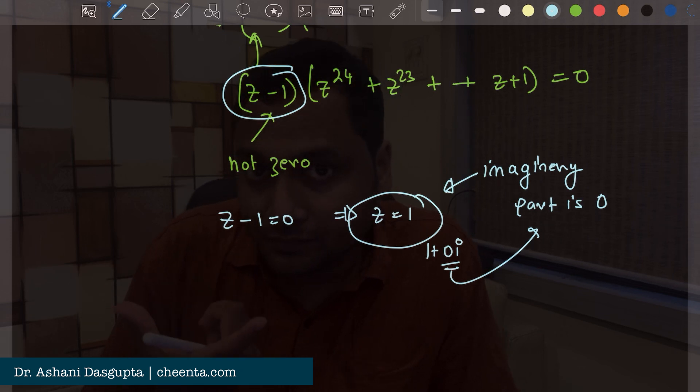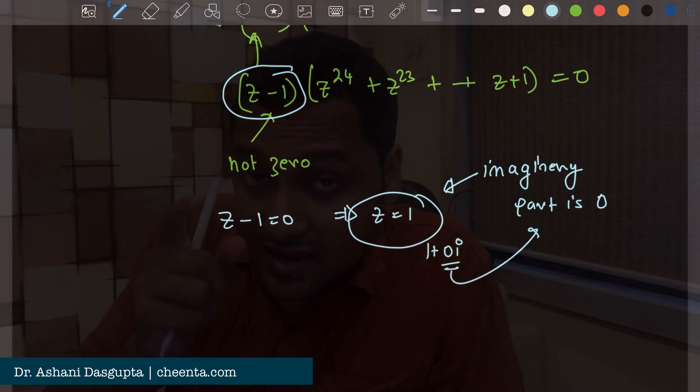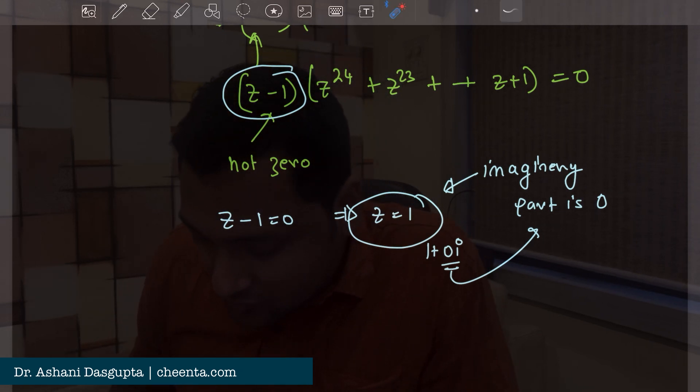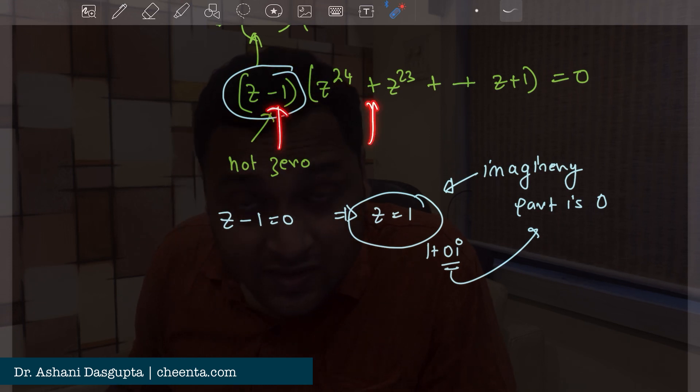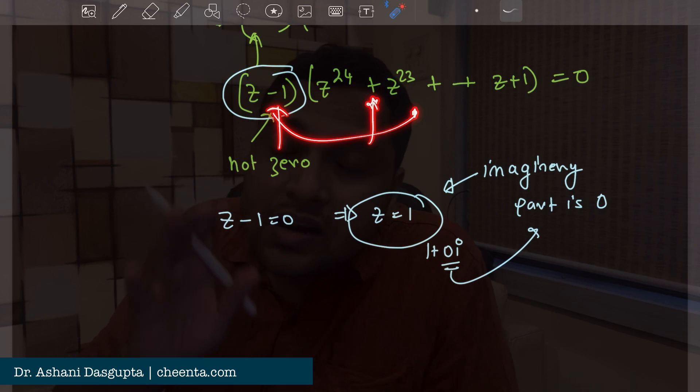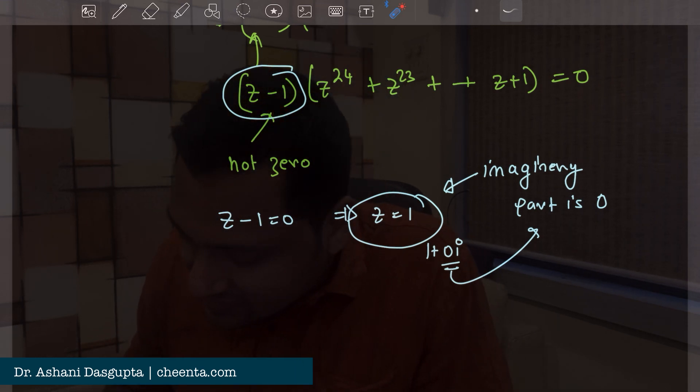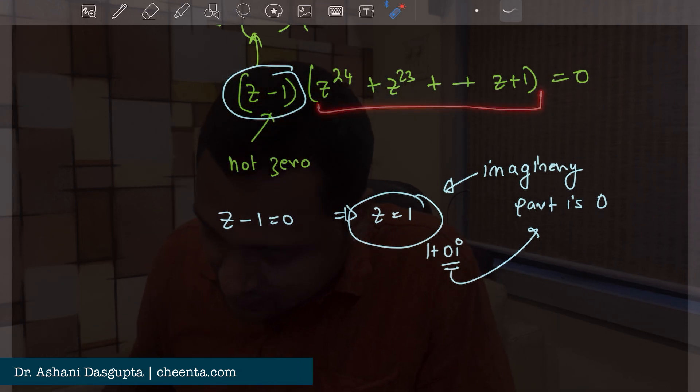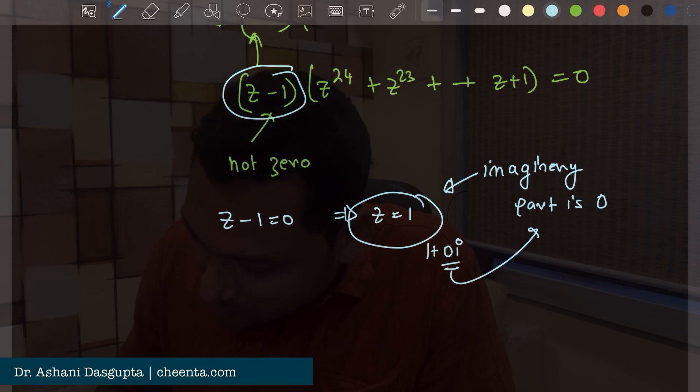So the only other option, and you have to understand this very carefully because one of these two must be 0 in order to have the product equal to 0. So the only other thing that can happen is that this part is 0.